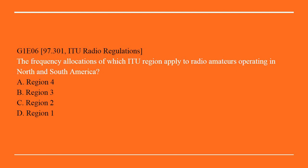G1E06: What are the frequency allocations in which ITU region apply to radio amateurs operating in North and South America? A. Region 4. B. Region 3. C. Region 2. D. Region 1. The correct answer here is C: Region 2.